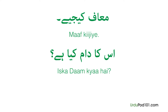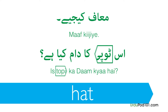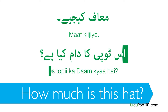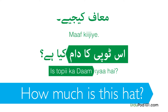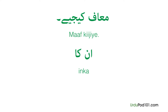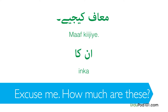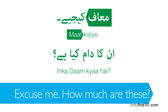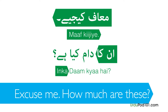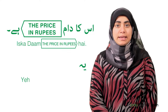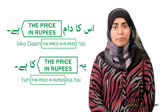Let's see an example. Suppose you want to buy a hat in the market. Hat in Urdu is topi. Is topi ka daam kya hai? But what if you want to buy several things? Then you would have to use a new word: in ka, which means 'these.' Excuse me, how much are these? — Maaf kijiye. In ka daam kya hai? At this point the shop clerk can answer by saying: Iska daam [price] hai, or Yeh [price] ka hai.